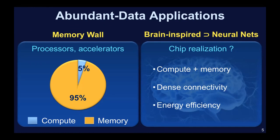When we think of abundant data applications, the most important characteristic is what I call the memory wall. Whether you pick energy or execution time, up to 95% of energy is spent trying to access the memory. And this is true regardless of whether you have programmable processors, von Neumann processors, or hardware accelerators. All of them have the memory wall. So if we want improvements in performance for abundant data applications, the first thing we have to do is address the memory wall.